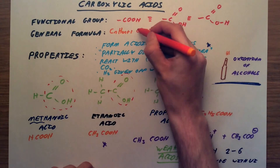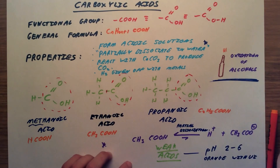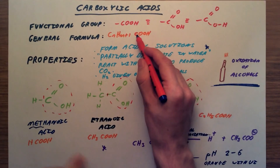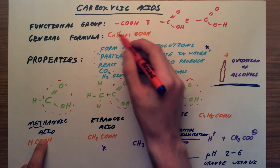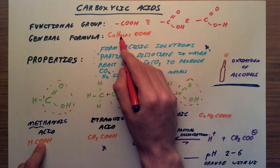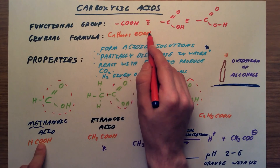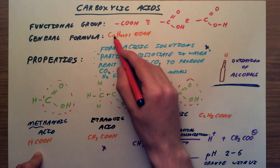One thing to bear in mind is that for methanoic acid, we still have the COOH on the end, but n is actually zero. So for methanoic acid, we have no carbons in the CₙH₂ₙ₊₁ part — H₂ₙ₊₁ would just be zero plus one, giving us one hydrogen, then COOH, which is why we have HCOOH for methanoic acid.